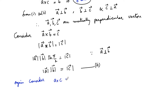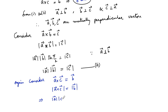Now consider a cross c is equal to b vector. Applying mod on both sides: mod of a cross c is equal to mod b. By the definition of cross product, we can write mod a times mod c times sine of the angle between the two vectors. Since a is perpendicular to c, we can write sin(π/2), i.e., the angle between them is 90 degrees, which is equal to mod b.